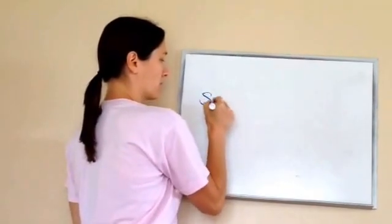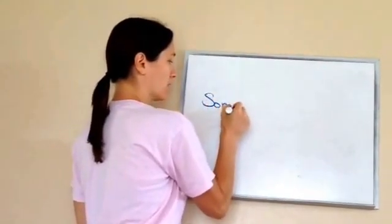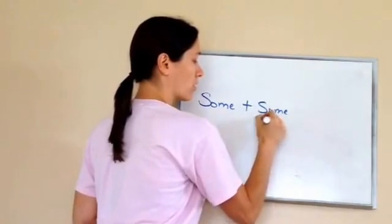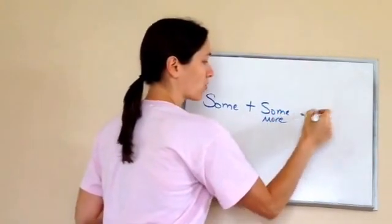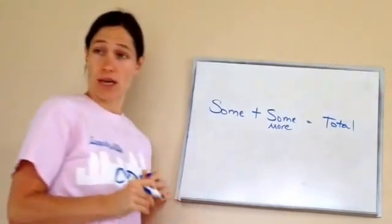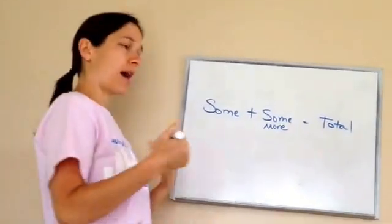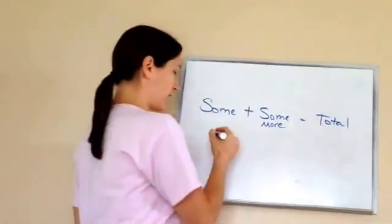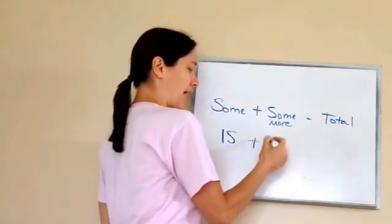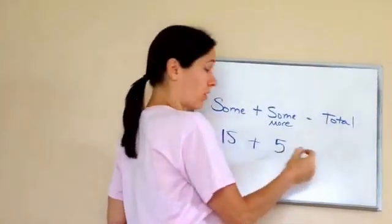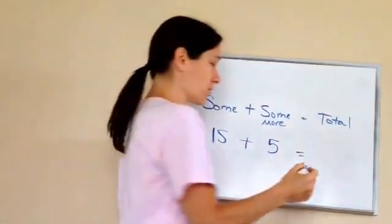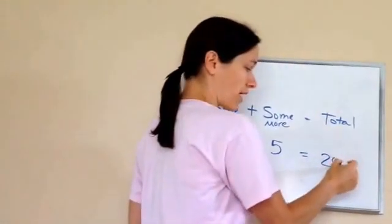What you're learning about today is problems like: I have some money, then I have some more, and it equals my total amount. For example, I had fifteen dollars and then I had five dollars more — how much do I have total? You would say 20, right?